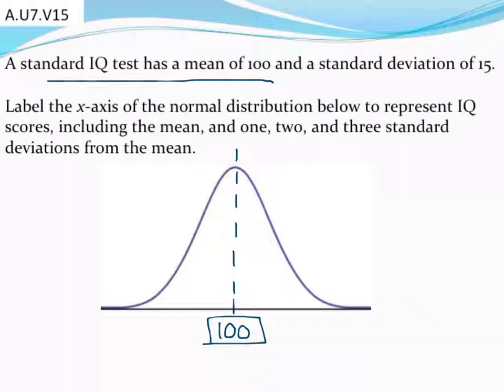What I want to do then is I want to find or mark one, two, and three standard deviations both above and below the mean. We're just going to estimate where these are. I'm just going to put three marks down here to represent the three standard deviations above the mean. And similarly, I'm going to make three marks down here to represent three standard deviations below the mean.